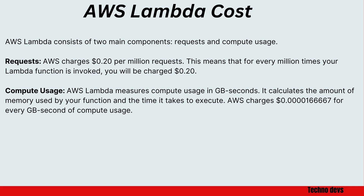What is the cost of AWS Lambda? AWS Lambda consists of two main components: requests and compute usage. For requests, AWS charges 20 cents per million requests. This means that for every million times your Lambda function is invoked, you will be charged 20 cents.